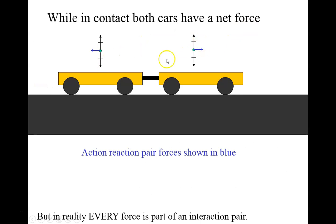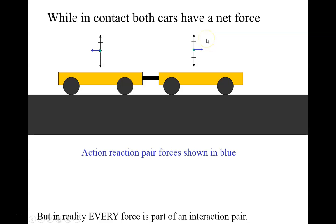If we picture the force diagrams for each of these cars while they're pushing off of each other: there's a force of gravity down, there's a normal force up, so the forces in the Y cancel — we're not accelerating up or down. There is a force in the X direction pushing one car back, and a similar force body diagram for the other with the force on the left. This is the force on car A by car B, and this is the force on car B by car A. The reason those forces don't cancel is because they're on different objects.